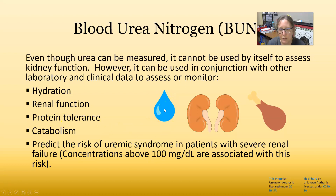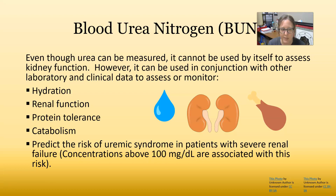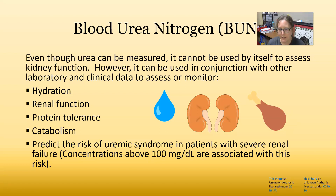BUN can be used to monitor hydration because as a person becomes dehydrated, blood urea nitrogen levels become more concentrated and rise, but as soon as you rehydrate the patient, BUN usually returns to normal ranges. It also increases when kidney function declines, and because nitrogen comes from protein, it fluctuates with protein intake and protein catabolism. Assessing protein tolerance may be especially important if a patient is in liver failure.